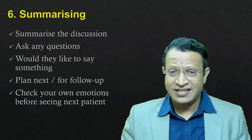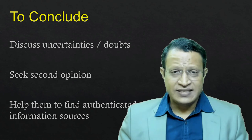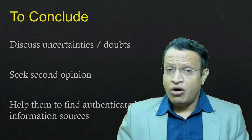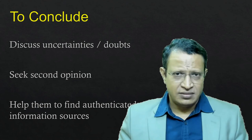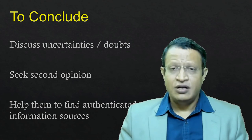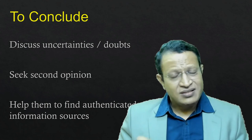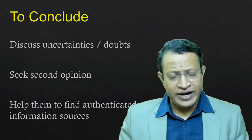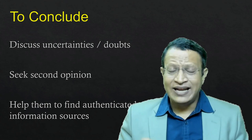These are the very essential six steps of the SPIKES model. To conclude, when discussing bad news you may have uncertainties about the diagnosis or prognosis, or your own doubts regarding the patient's condition. Please discuss this openly — do not hide or avoid it. Document that the uncertainty has been explained. If you have a doubt, seek a second opinion and encourage the family to do the same. Help them find authenticated information, as this alleviates their anxiety and helps them to make decisions.